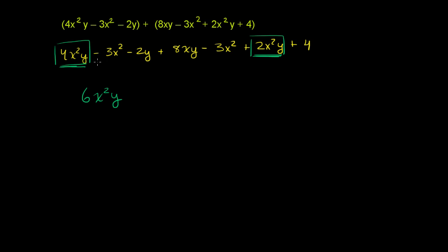Now let's go to this x squared term right here. Do I have any other x squared terms? Well, I have this one right here, another negative 3x squared. So if I have negative 3x squared minus 3x squared, that's going to be negative 6x squared.